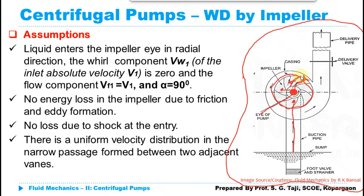When the water moves outward, it reaches the casing. This casing has a gradually increasing area of flow, so the kinetic energy of water is converted into pressure energy. As water moves toward the delivery pipe, pressure goes on increasing, and at the outlet of the casing, pressure reaches its maximum value.